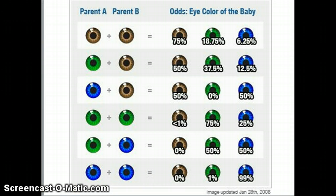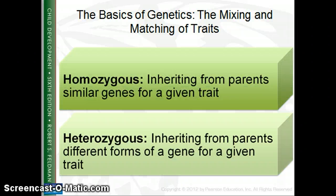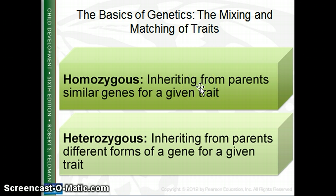It also depends on whether a parent is a carrier of the recessive gene of the non-displayed eye color. Your genotype is the underlying combination of genetic material that is not outwardly visible in an organism. Your phenotype is the observable trait that you can actually see — there are good examples in your textbook on page 55. Homozygous means you inherited similar genes from both parents; heterozygous means you inherited different forms of a gene for a given trait.